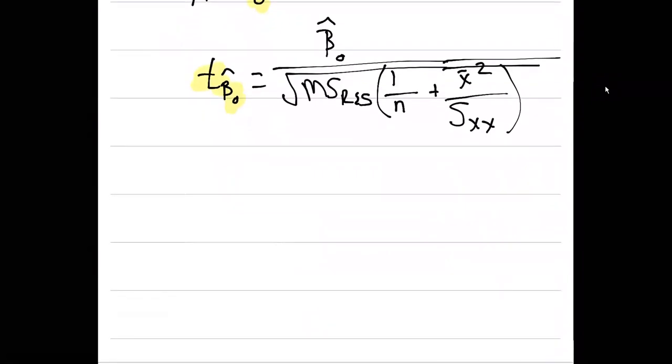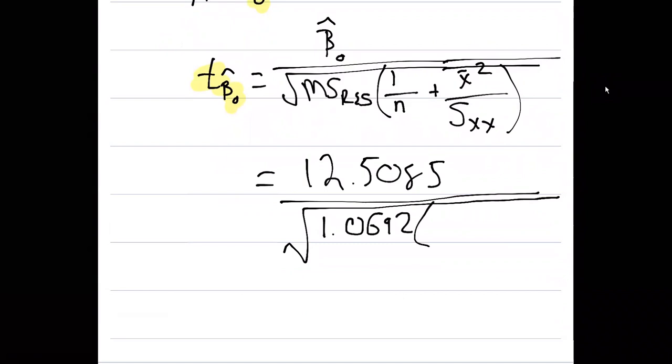Let's plug the values in for our data. You'll remember we found the intercept to be 12.5085. We divide that by the square root of 1.0692 times one over 12, we have 12 samples, plus our mean x bar. That would be the mean of the lysine ingested was 0.1658. And remember, we'll square that. And then we divide that by s sub x x or 0.0221.